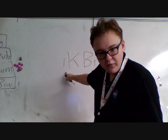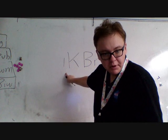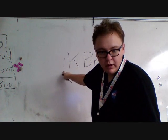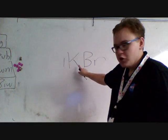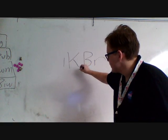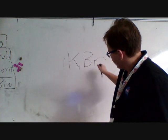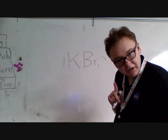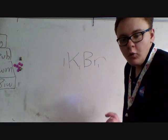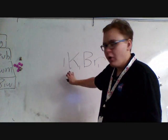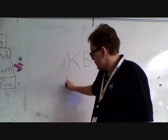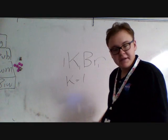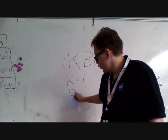We know, since there's no coefficient here, there's no number here, there has to be an invisible one. There's no number here, so there also has to be an invisible one, and also on the bromine, an invisible one. So we can tell that each molecule of potassium bromide has one potassium and one bromide.